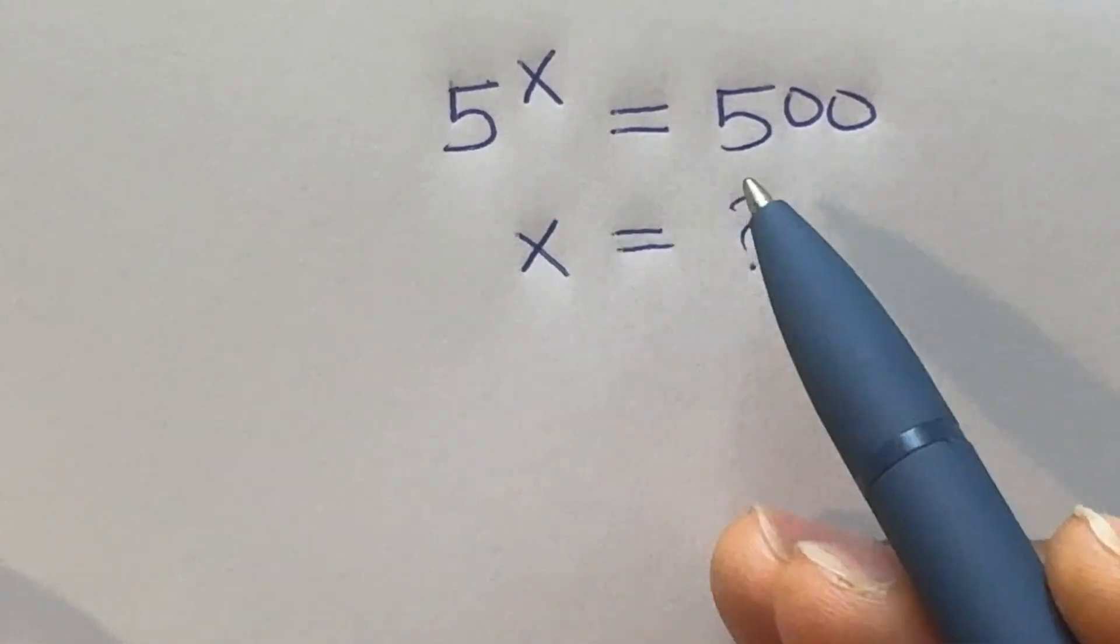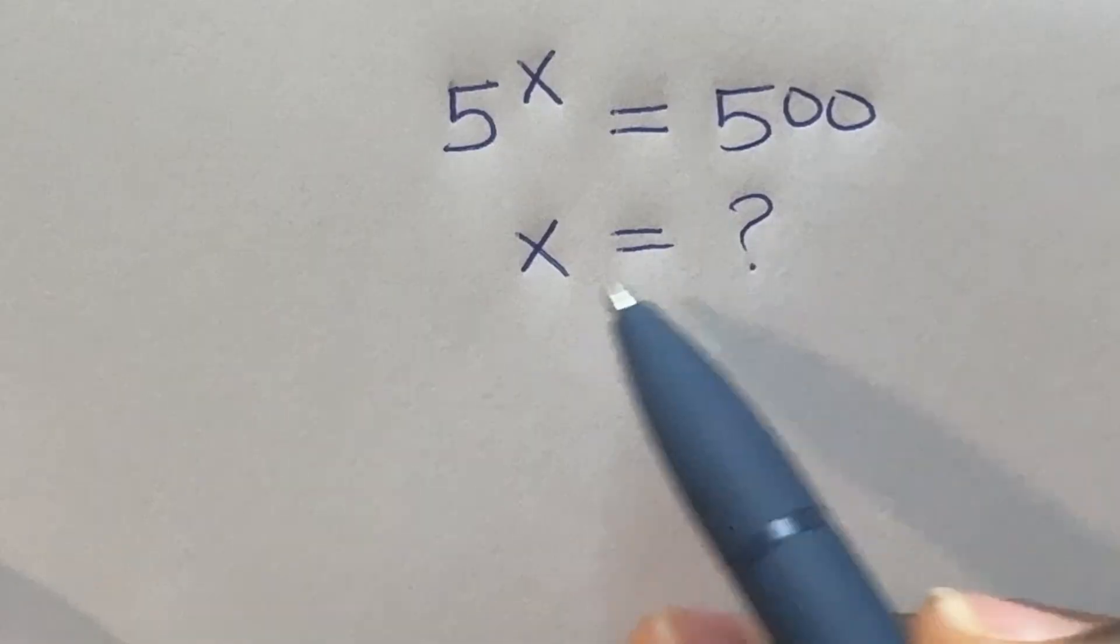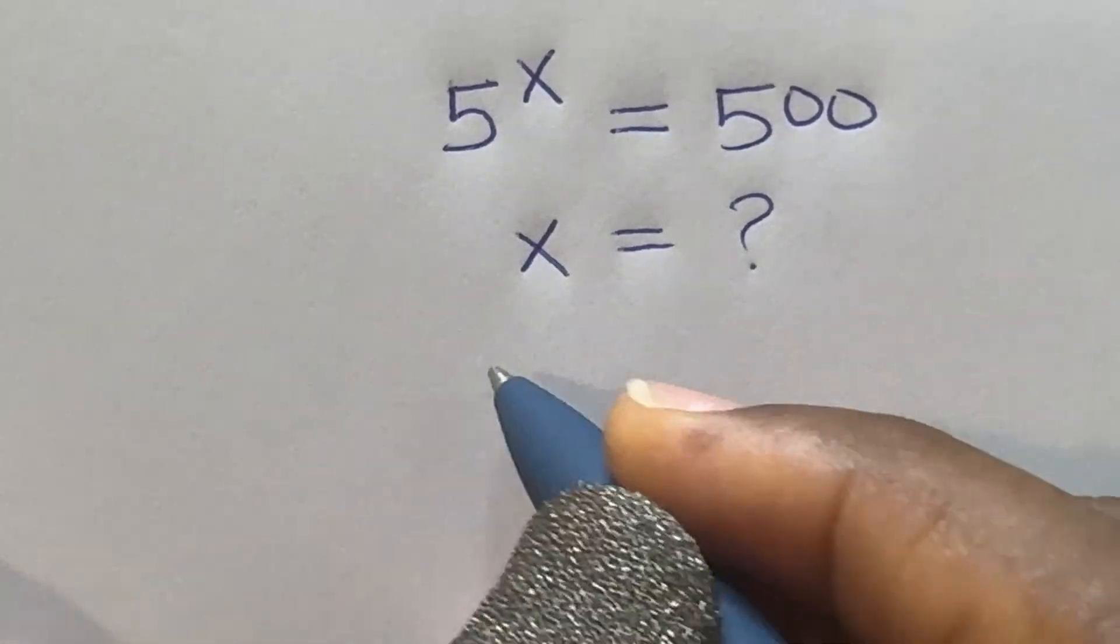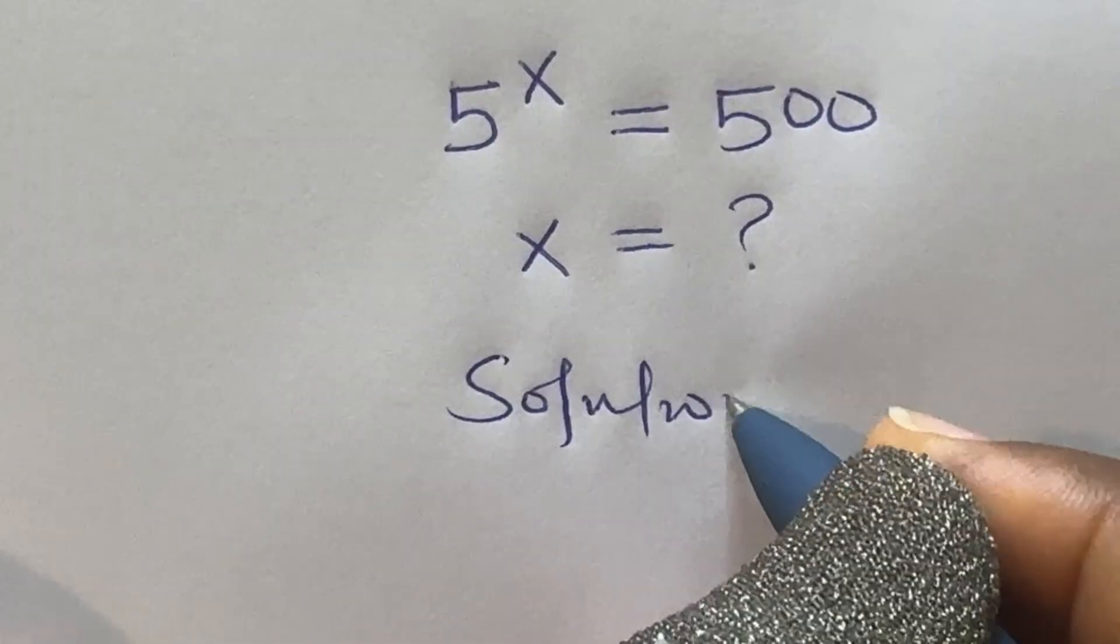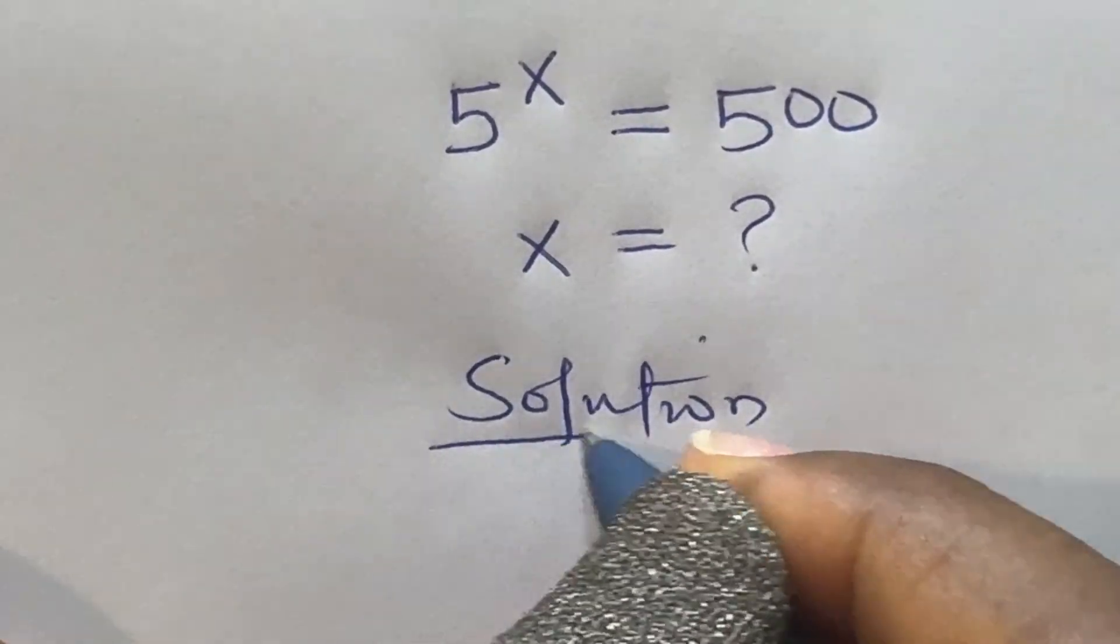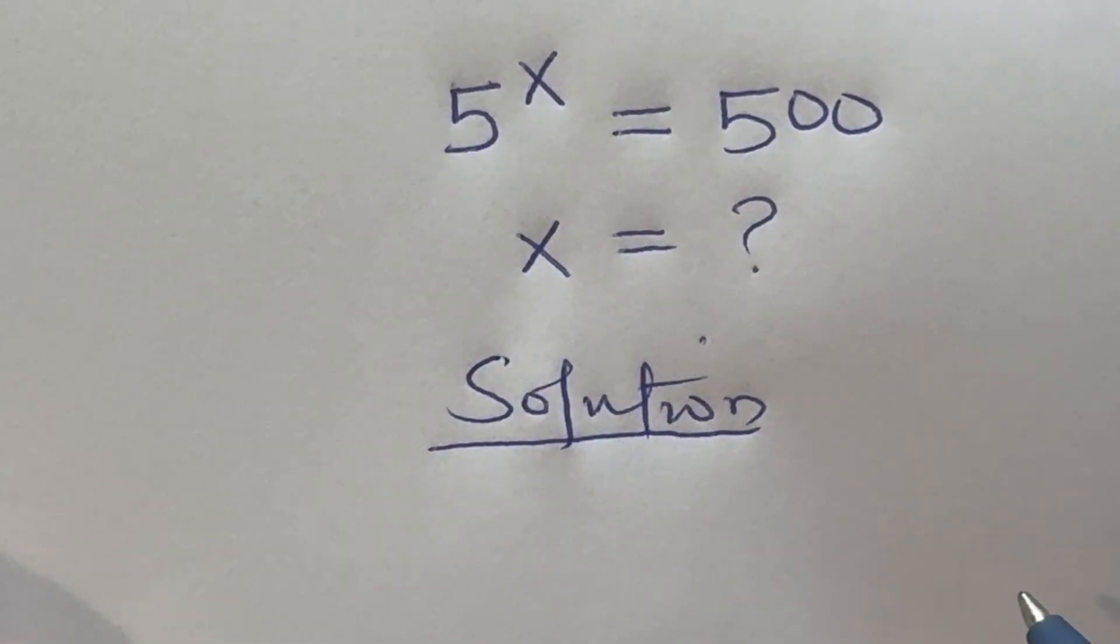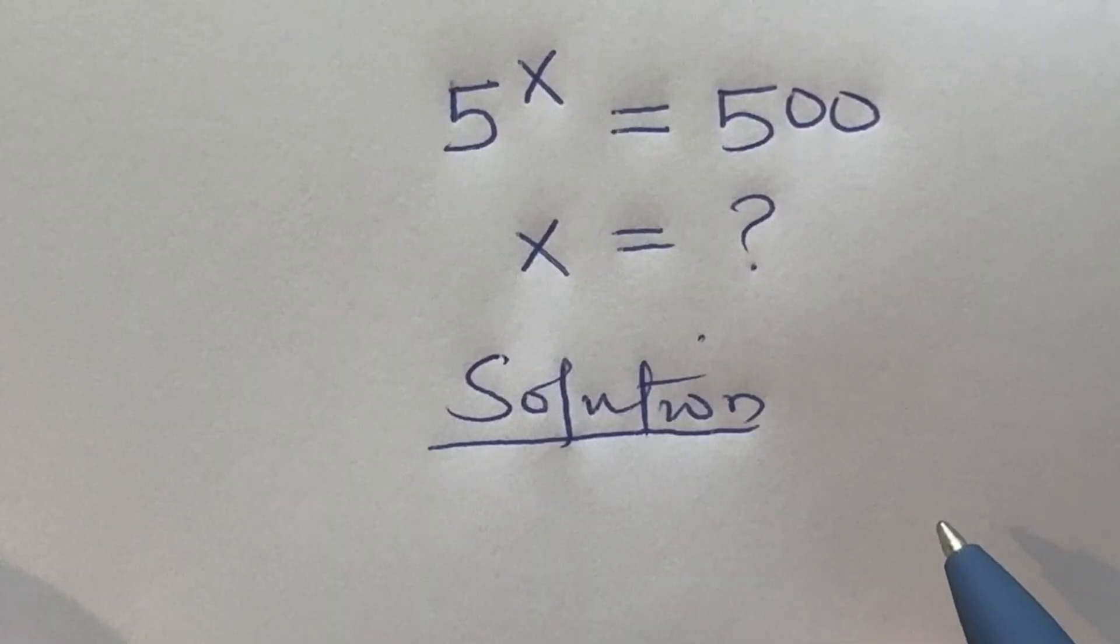5 raised to power x is equal to 500, find x. 5 raised to power x equals 500 is an exponential problem.